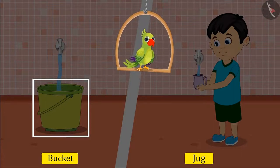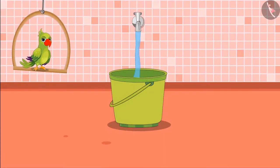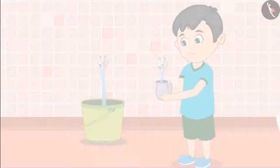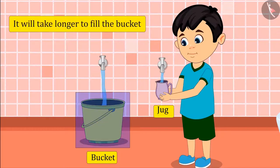Yes, the first thing to get filled is the jug, and later the bucket. Because Jhotu's jug is smaller than the bucket, it will carry less water. This means it will take more time to fill the bucket.